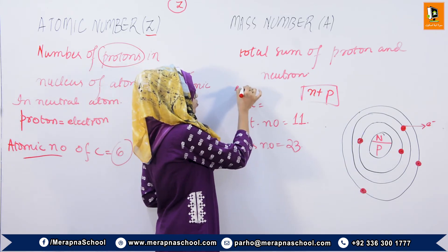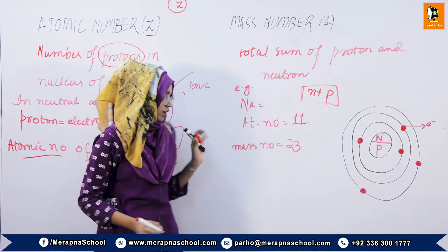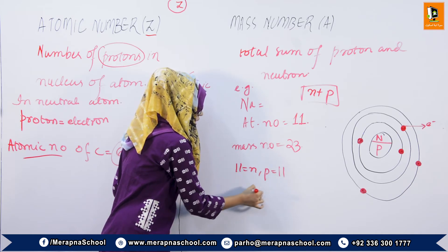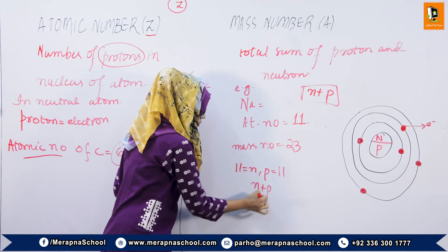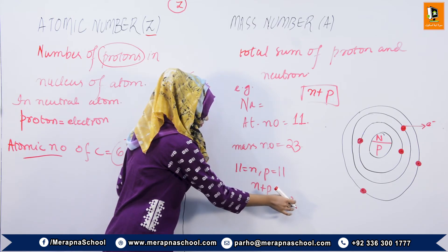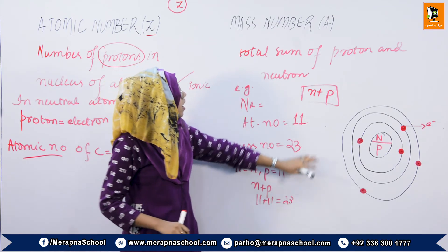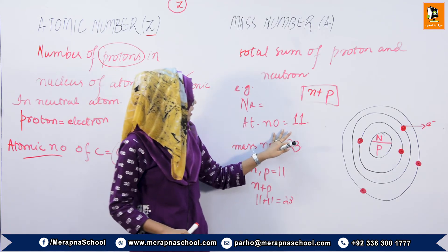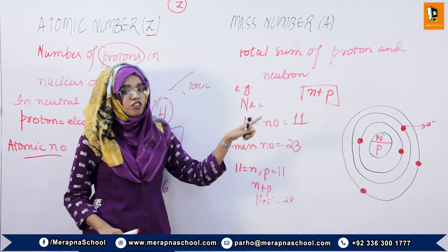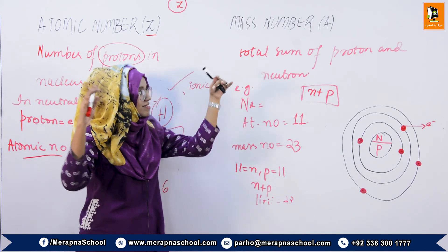अब एक example: sodium का mass number क्या है? 23 है, क्योंकि इसमें 11 neutrons होते हैं और 11 protons होते हैं, तो इन दोनों का sum — 11 plus 11 equals 23 — sodium का mass number 23 है। जबकि इसका atomic number 11 है, क्योंकि number of protons 11 हैं। So atomic number और mass number में फर्क: these are the number of protons; these are the number of protons plus neutrons.